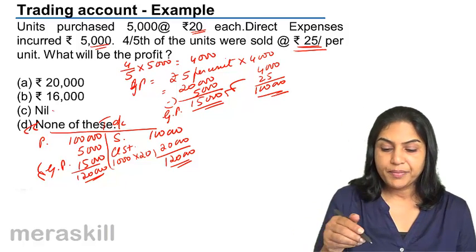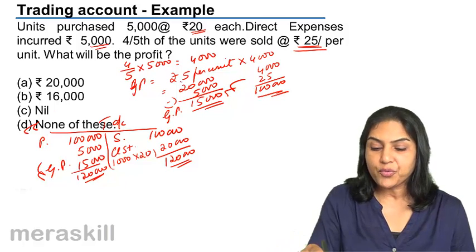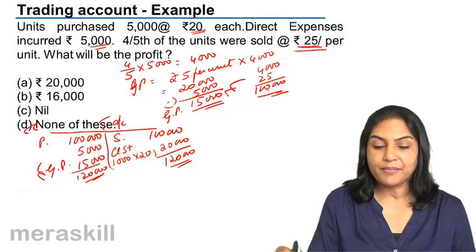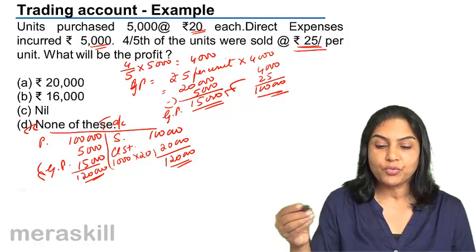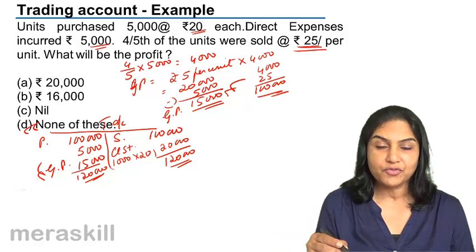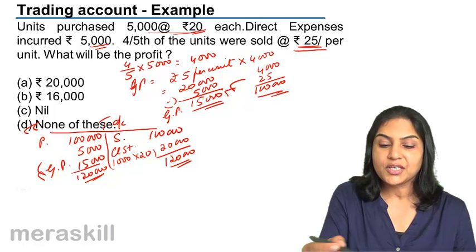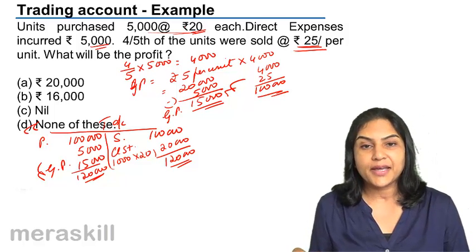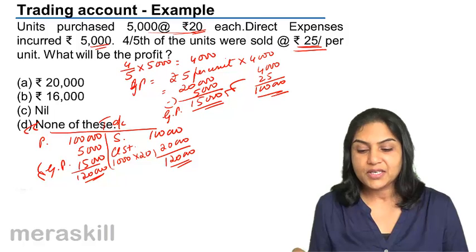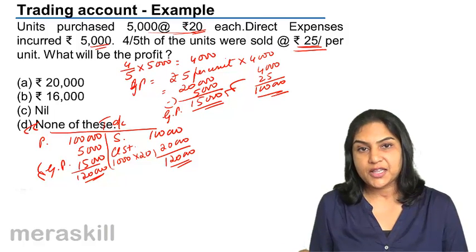Whether you do it by trading account or by the simpler equation method, the result is the same. Cost of goods sold equals opening stock plus purchases minus closing stock plus direct expenses. Sales minus the cost of goods sold gives a gross profit of 15,000.